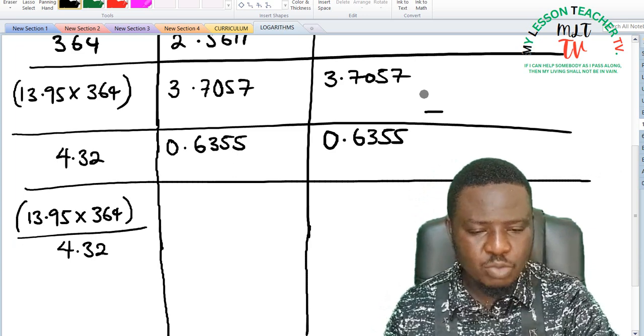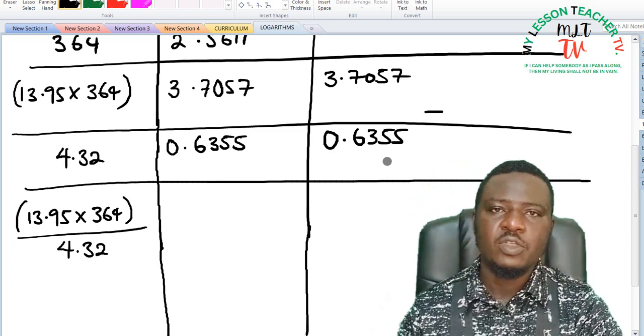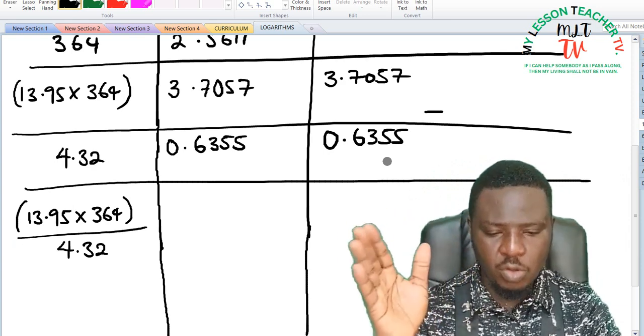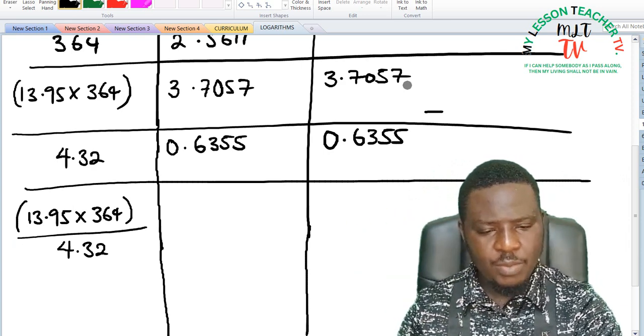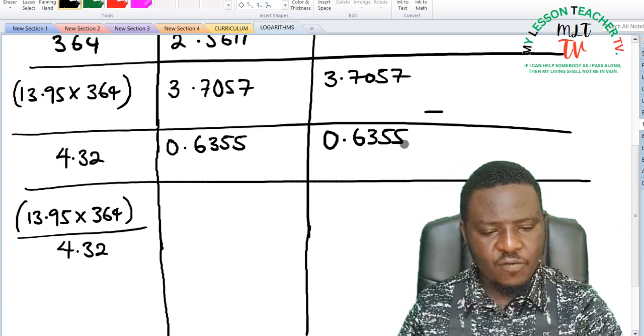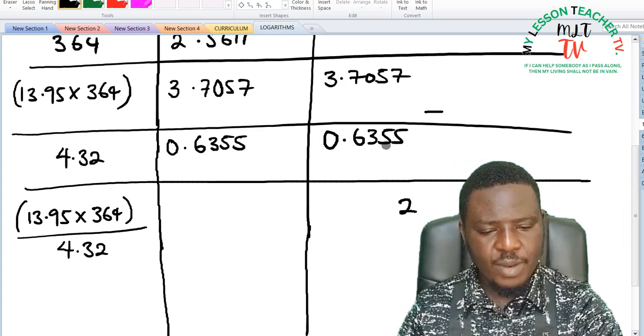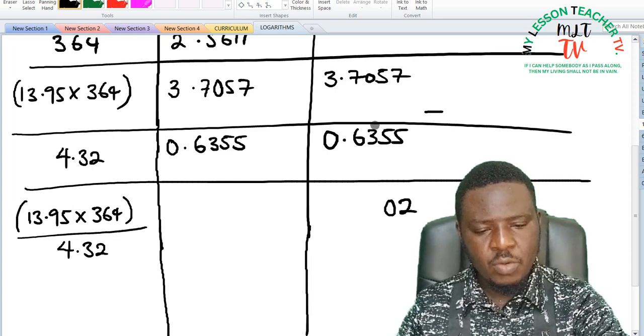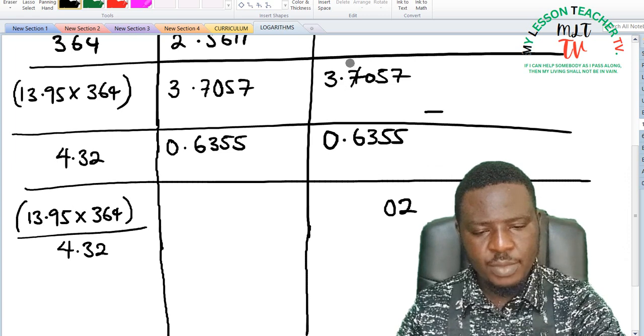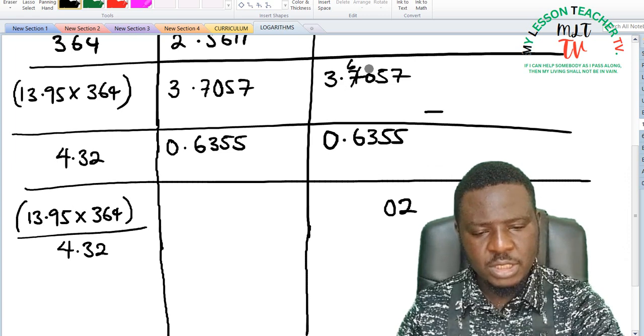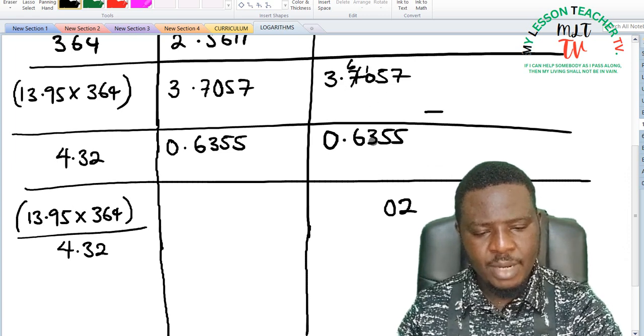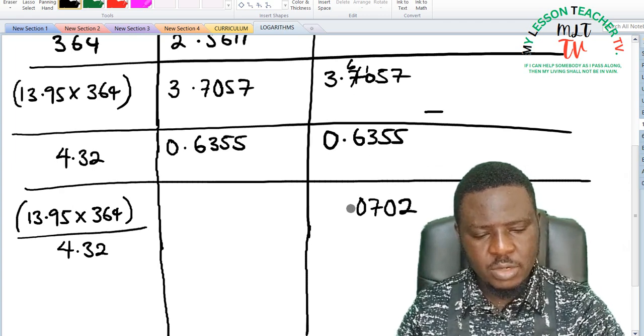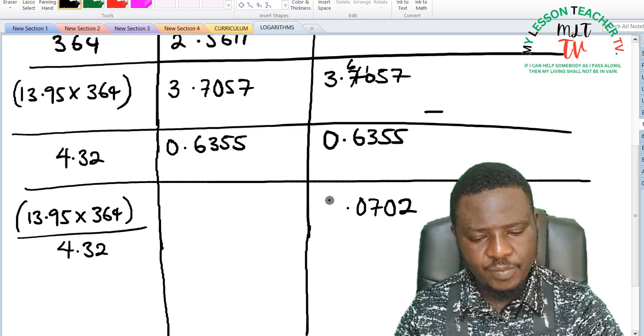Is said to be the subtraction of this. So division in number is equivalent to subtraction in log. This will now be 7 minus 5 is 2, 5 minus 5 is 0, 0 minus 3 cannot, you borrow 1 from here, this becomes 6 and this is 10, 10 minus 3 is 7, 6 minus 6 is 0.3.